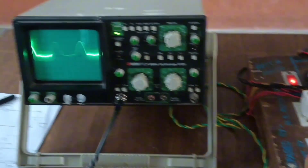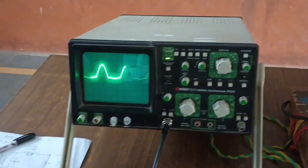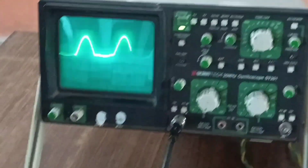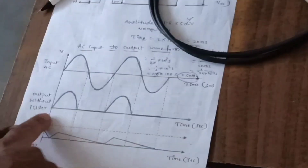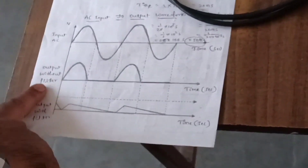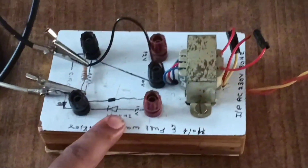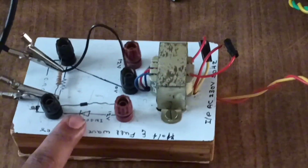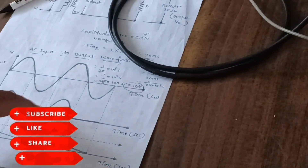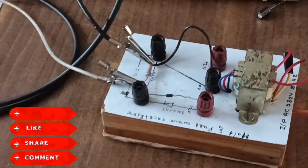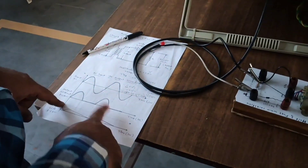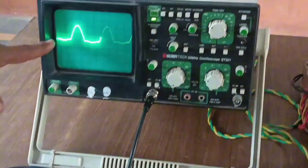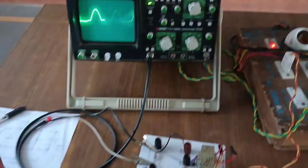We make the switch on. As shown in the output waveform, without a filter and using only a single diode, only the positive half cycle passes through. The negative half cycles are blocked — so the waveform alternates positive, negative, positive, negative as shown on the CRO.